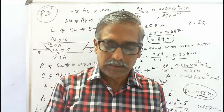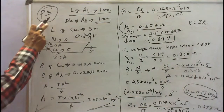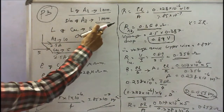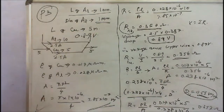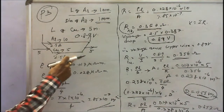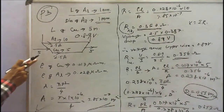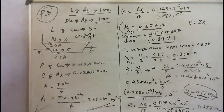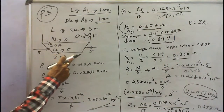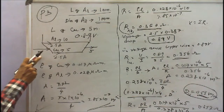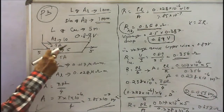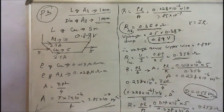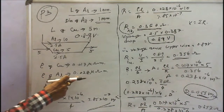Given: length of aluminium conductor = 10 meters, diameter of aluminium = 1 mm, length of copper wire = 5 meters. The two wires are connected in parallel. Total current = 5 amps, current through aluminium = 2.5 amps. By Kirchhoff's current law, current into junction is 5 = 2.5 + 2.5, so current through copper conductor = 2.5 amps. Resistivity of copper = 0.017 micro-ohm-meter, resistivity of aluminium = 0.028 micro-ohm-meter.